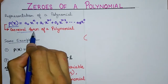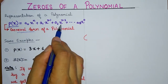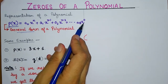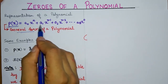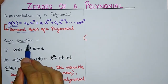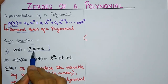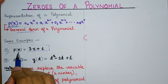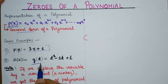The general form of a polynomial is: A₀Xⁿ + A₁Xⁿ⁻¹ + A₂Xⁿ⁻² + ... + AₙX⁰. Here A₀, A₁, A₂, ..., Aₙ are all constants, X is the variable, and N is a non-negative integer. So this is the general form of a polynomial. For example, P(x) = 3x + 1 is a polynomial where the variable is x.